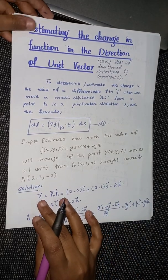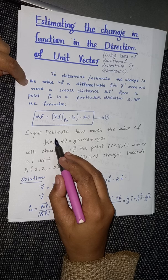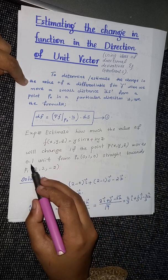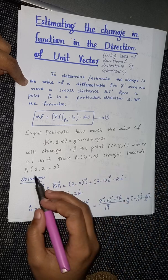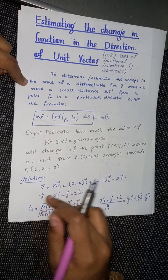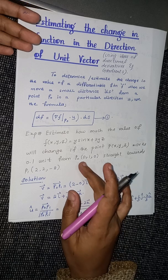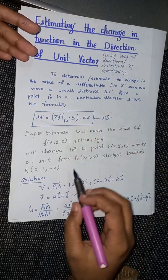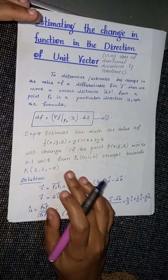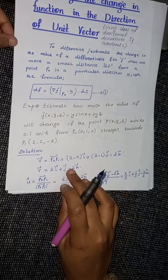Here is an example: estimate how much the value of our function will change if the point moves 0.1 units from p₀ straight towards p₁. We know our formula, but we are not given a unit vector directly — we are given two points. If we find the direction between them, we can estimate the vector and then find the unit vector.